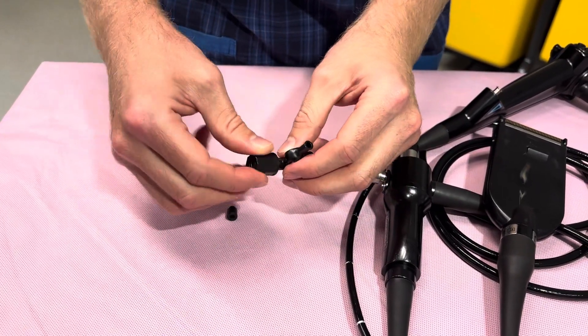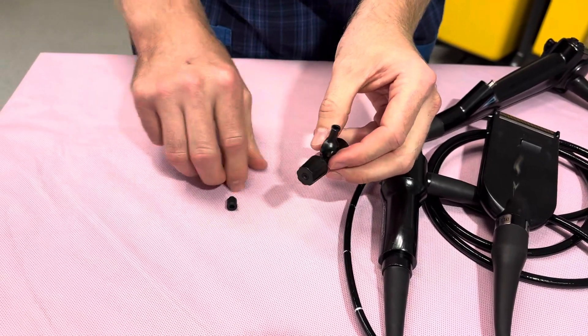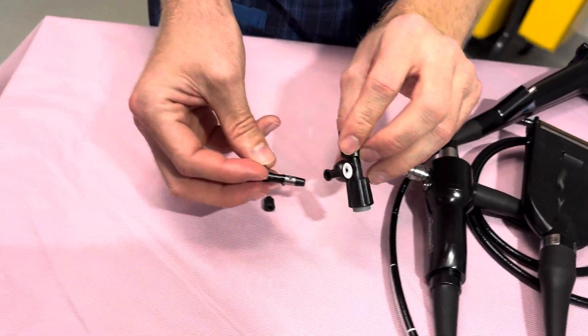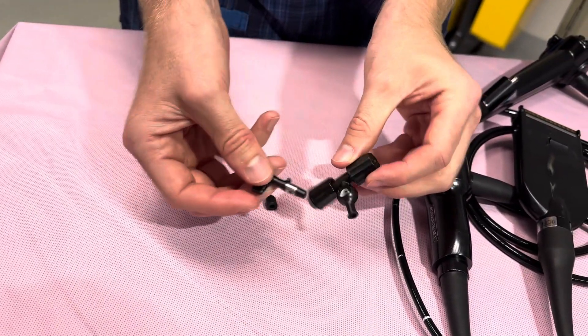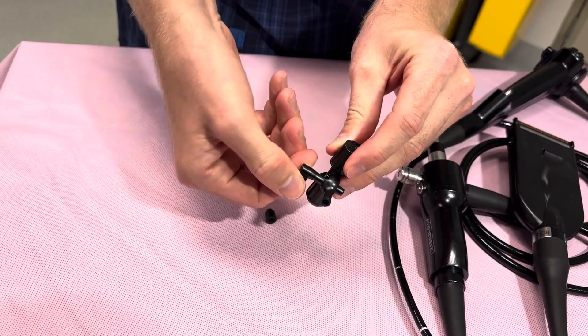The black cap then goes on top and twists down. This will sit only on one side where the notches will only go in one way, so it can sit in like that. That's to help turn the fluid on and off.